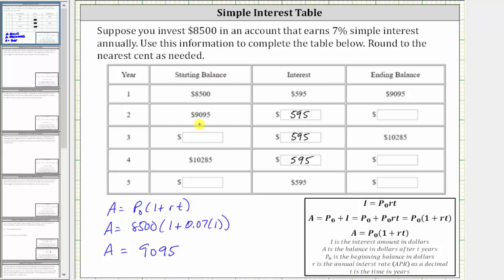Now to complete the table, the ending balance for year two is going to be $9,095 plus the interest of $595, which gives us $9,690.